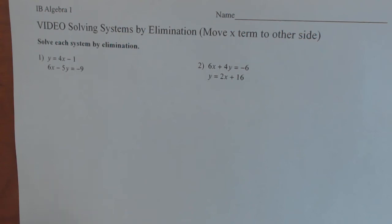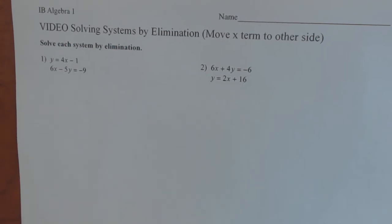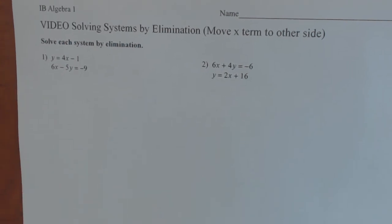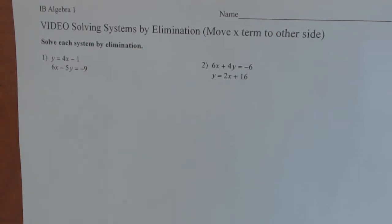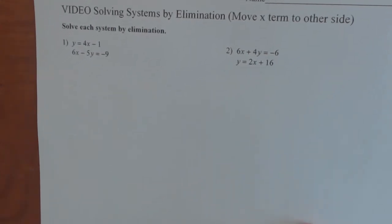Hello, this is Dr. Mears. Today we're going to be solving systems by elimination, moving the x term to the other side. What you're going to find is we're going to have one equation in y equals mx plus b form and one in standard form ax plus by equals c. So we're going to have to move the x variable over to one side.